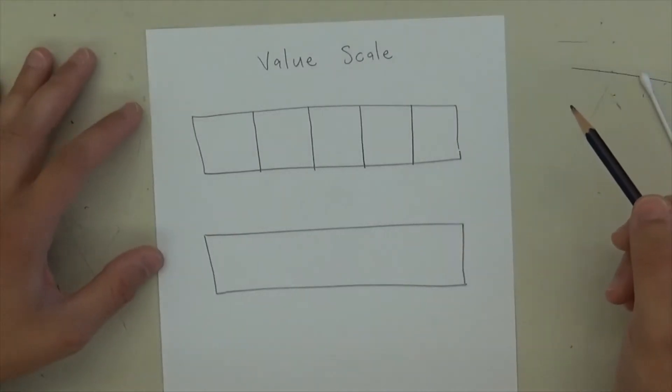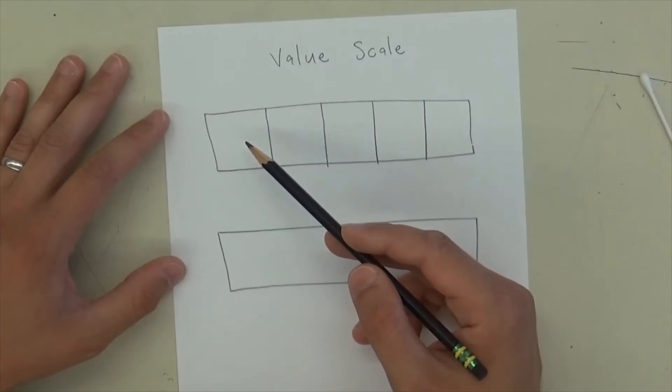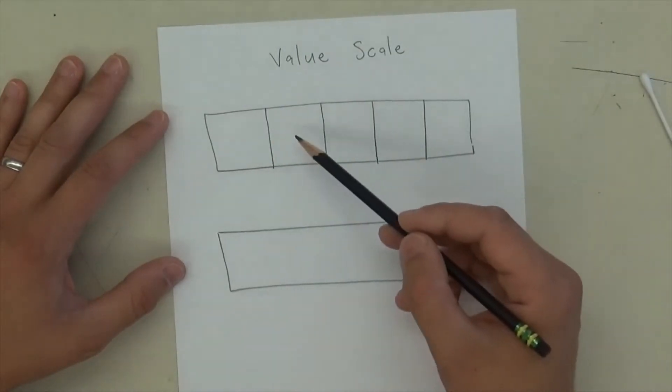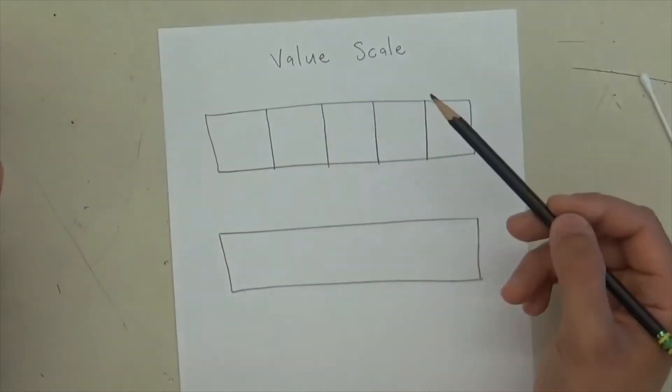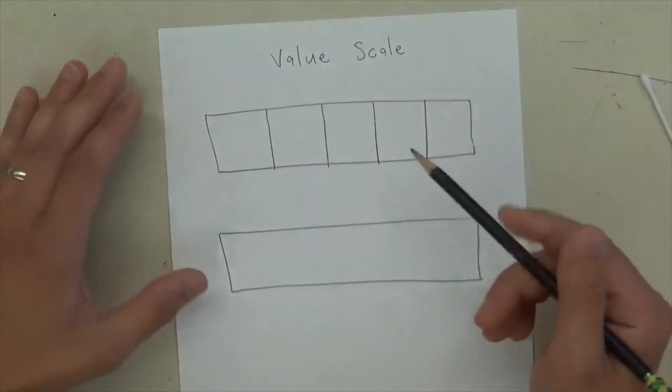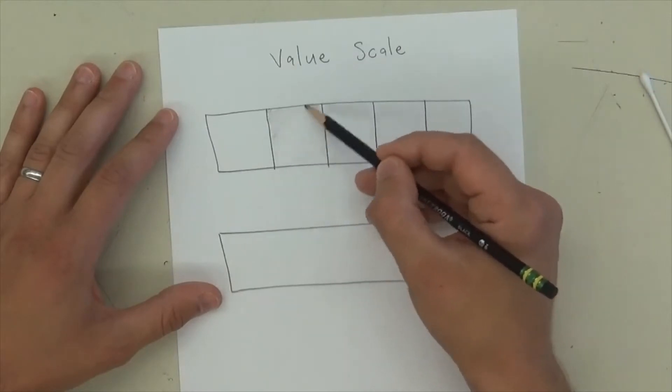So our first value is going to be really easy because it's white, and white is as light as it gets. It doesn't get lighter than that, so I don't have to do anything for that first box. The second one is light. So it's not as light as white, but it's still pretty light. So when I shade it, I'm going to push down very lightly,